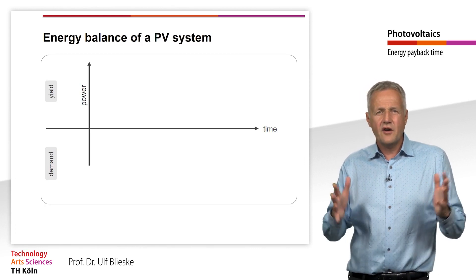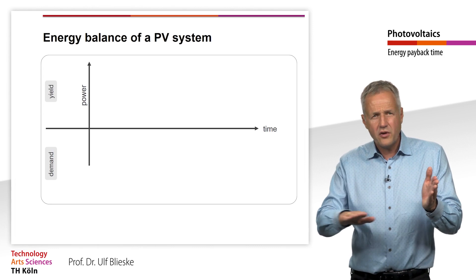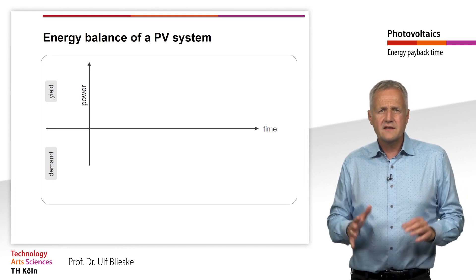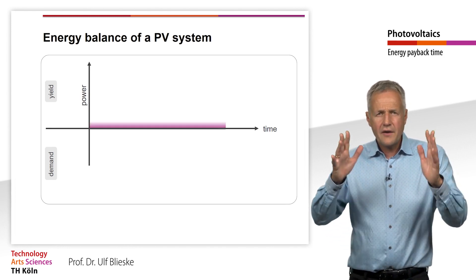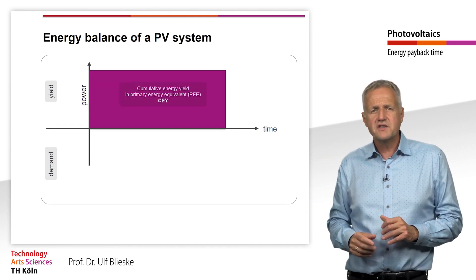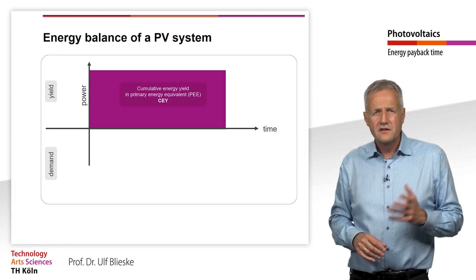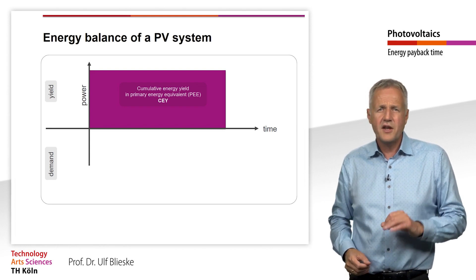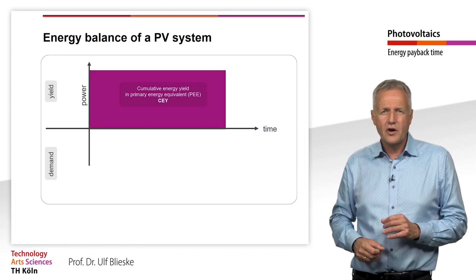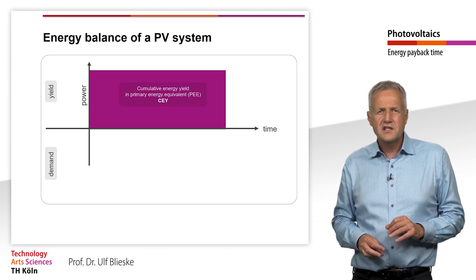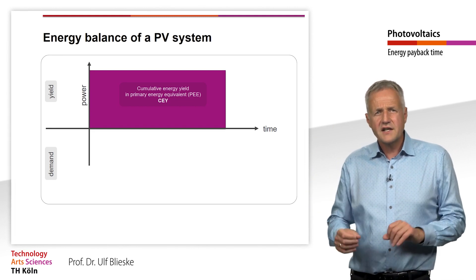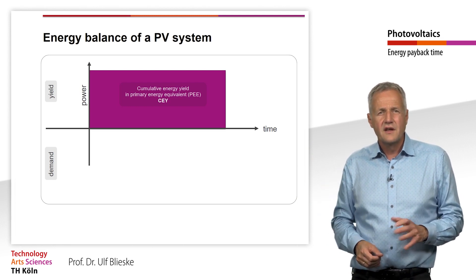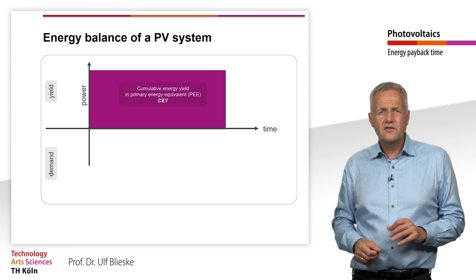We now look at the energy balance of an energy generation plant. Time is plotted on the x-axis, power on the y-axis. The point of intersection of both axes is the time of commissioning of the plant. The purple area is the accumulated energy yield of the power generation system over its entire lifetime. Strictly speaking, this area is not rectangular for fluctuating generators such as wind and solar plants, as these plants rarely deliver their nominal output. For clarity, we present the energy yield as a rectangle, with the right edge marking the point in time when the plant is taken out of operation. In any case, the energy yield refers to the primary energy.